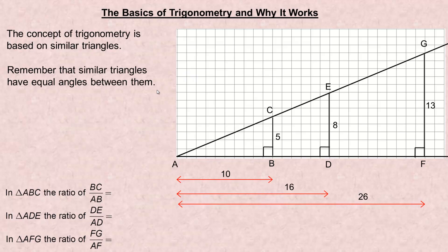Similar triangles have equal angles between them. There are three triangles here. The three triangles I am referring to are ABC — the smallest one — which is similar to triangle ADE, the middle size triangle, and AFG is the largest one.